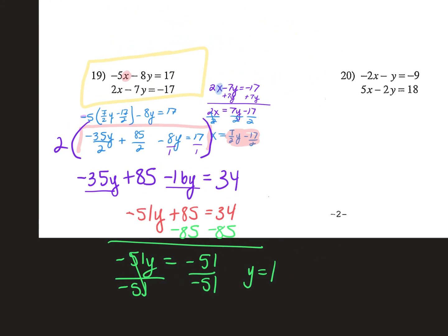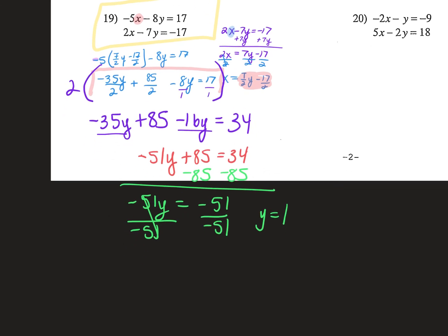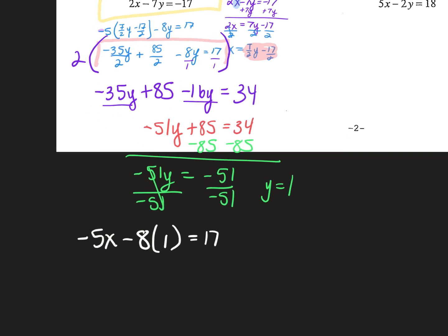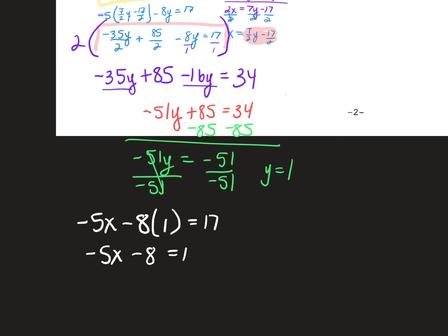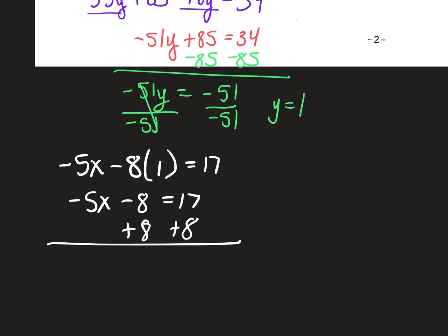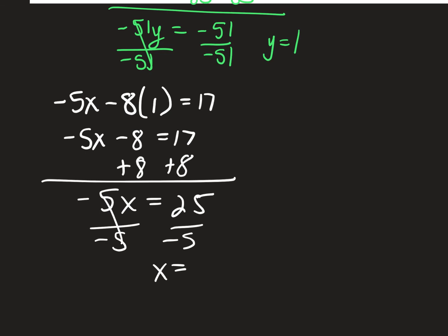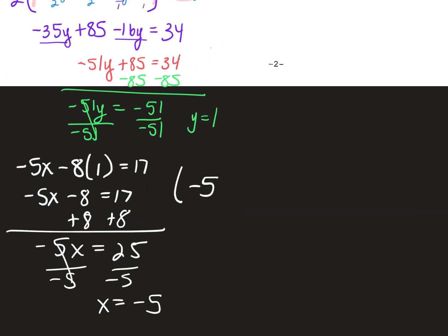Now that I know y equals 1, I plug it back in — I'll use the top one: negative 5x minus 8 times 1 equals 17. Negative 5x minus 8 equals 17. Add 8 to both sides: negative 5x equals 25. Divide both sides by negative 5: x equals negative 5. So my ordered pair is negative 5 comma 1.